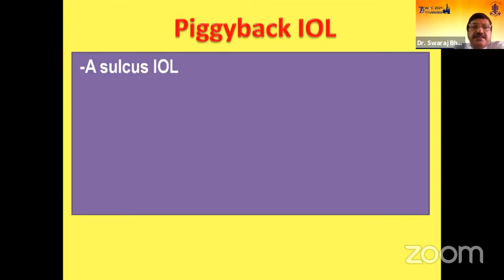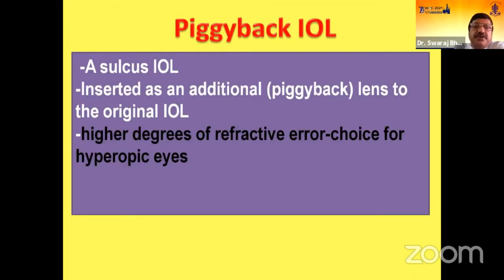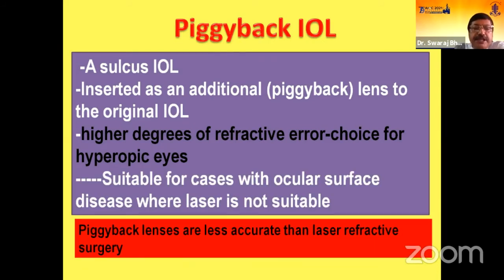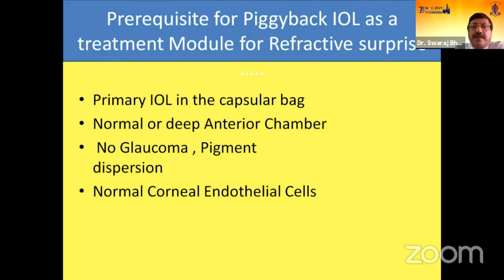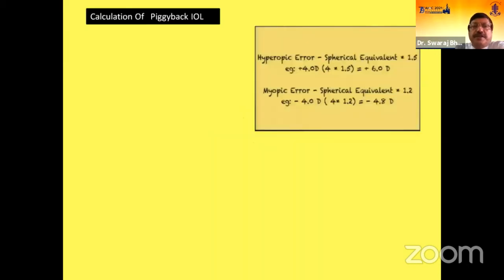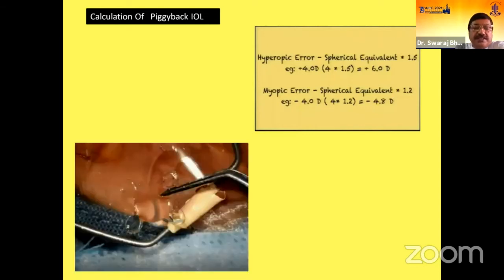A few words about piggyback IOL — it is a sulcus IOL inserted as an additional lens to the original IOL. It corrects a higher degree of refractive error, particularly hypermetropic, and is suitable for cases with OASD diseases. Piggyback lenses are less accurate than laser refractive surgery. Prerequisites include primary IOL in the capsular bag, normal or deep anterior chamber, no glaucoma or pigment dispersion, and normal corneal endothelial cell count. A suitable lens is the Calcoflex from Rayner or the Care Group. For calculation: hypermetropic error — multiply spherical equivalent by 1.5; for myopic error — spherical equivalent multiplied by 1.2. It has a four-plate haptic design.